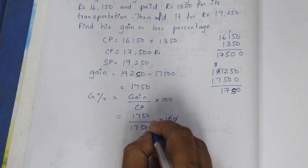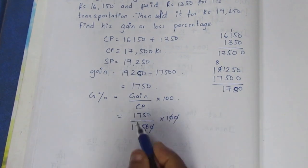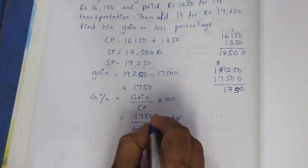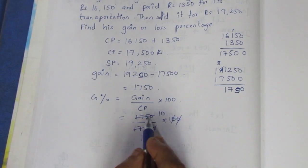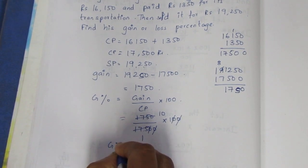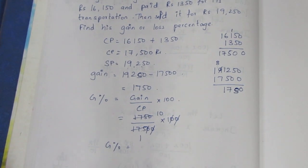So 0-0 cancel, 0-0 cancel. 175 into 175 is 1, leaving 10. So gain percent equals 10%.